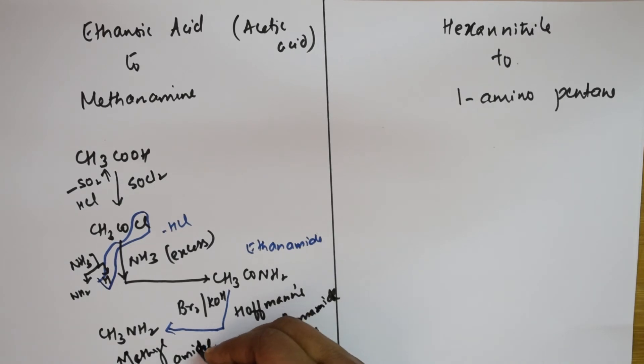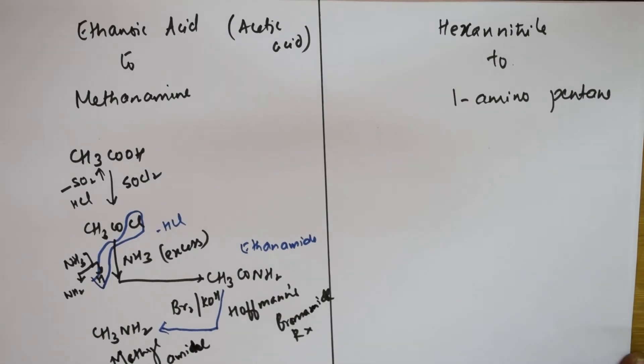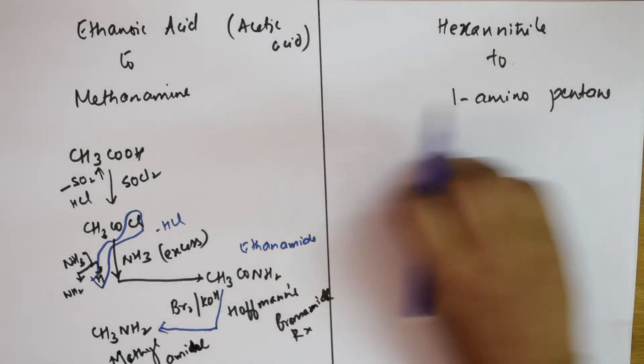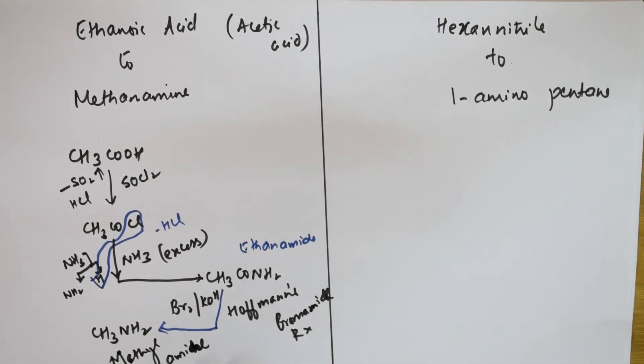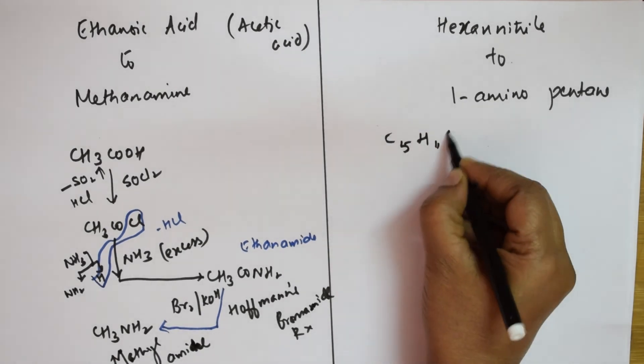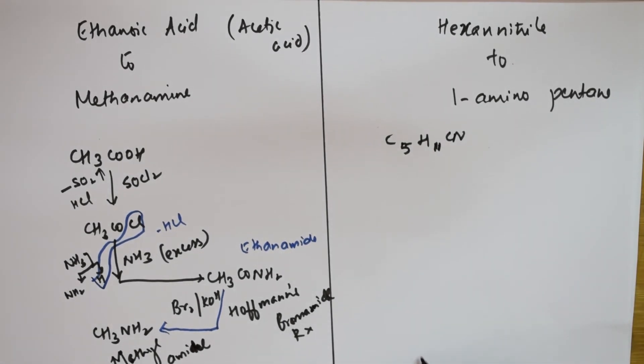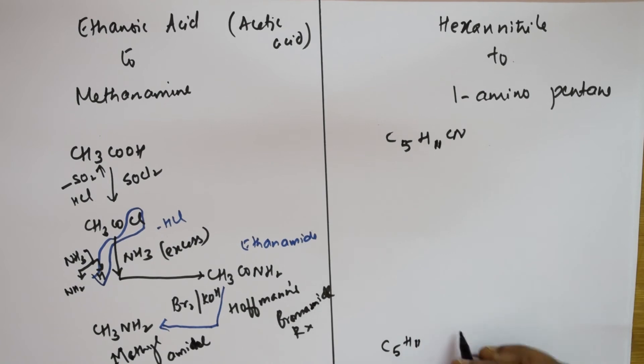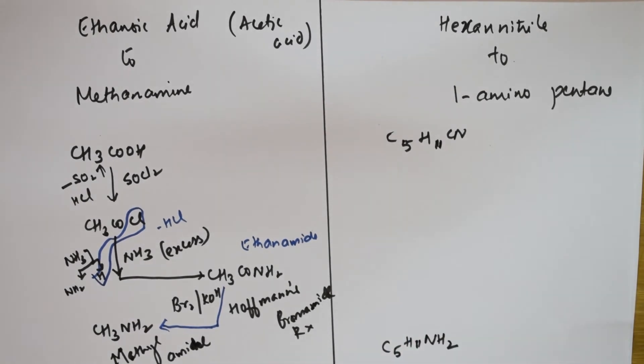So that's the answer: methyl amine. Now let's see the last one. Hexane nitrile to 1-aminopentane. Let us write hexane nitrile. What do they give me? Hexane means hexane—basically it is an alkane, right? So when I instead of writing the whole chain, you can also write six carbons. The last one would be nitrile, but instead of that I can always write C5H11CN. What did I write? C5 plus 1 is 6, nitrile—so hexane nitrile. To 1-aminopentane, so I am going to write C5H11NH2. I need to convert this to this.